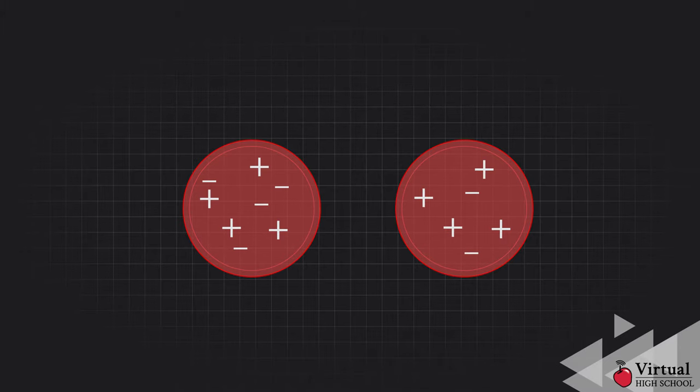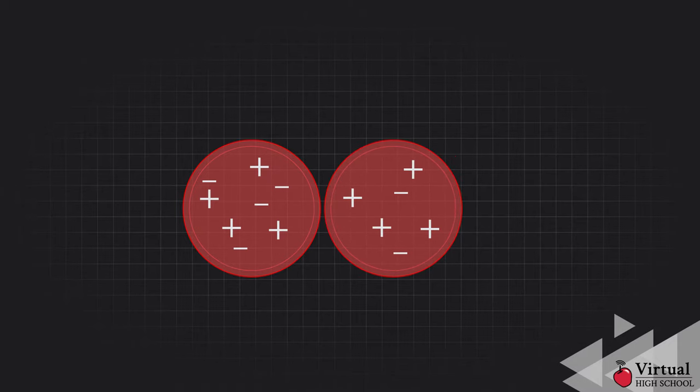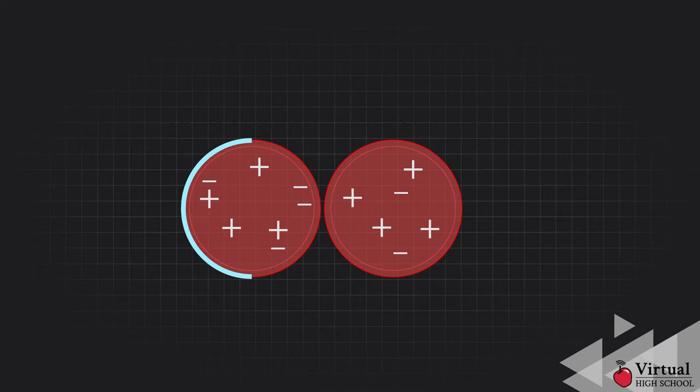If the positively charged object is brought near the neutrally charged object, it will induce a charge. The positive charge attracts the electrons in the neutral object, which makes the side closest to the positively charged object more negatively charged, and the other side more positively charged. Note that the protons always remain stationary.